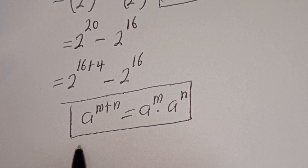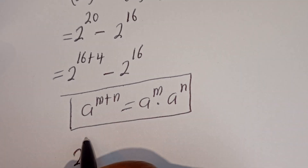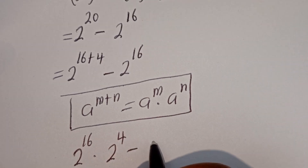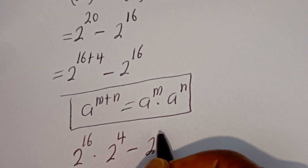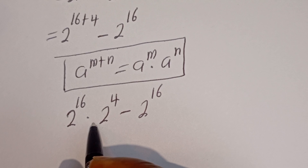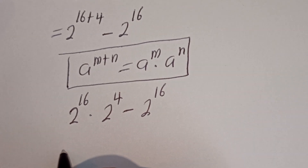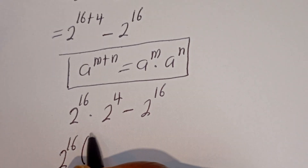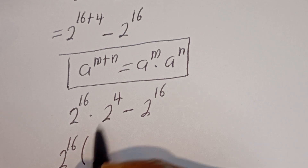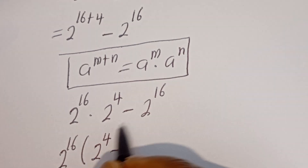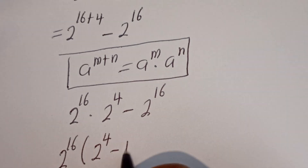And this can be written as 2 to the power of 16 multiplied by 2 to the power of 4, minus 2 to the power of 16. Here, 2 to the power of 16 is common — let's bring it out. We have 2 to the power of 16 times bracket 2 to the power of 4 minus 1.